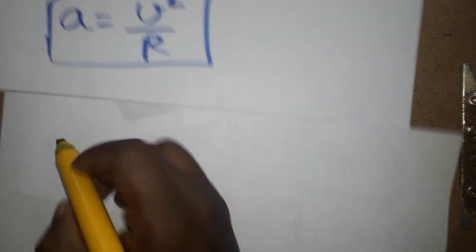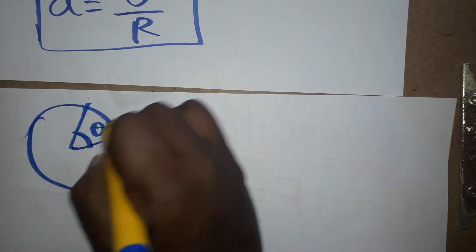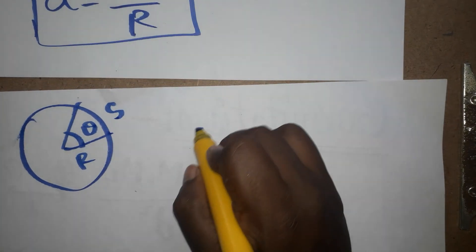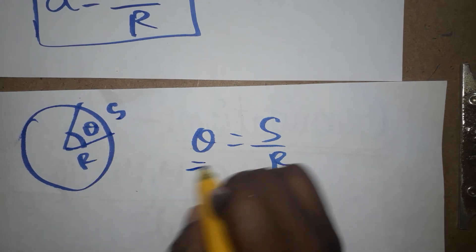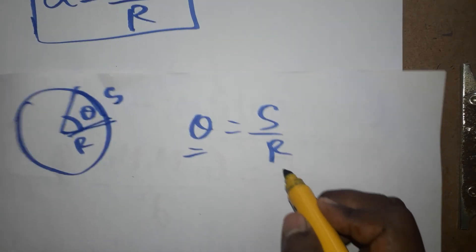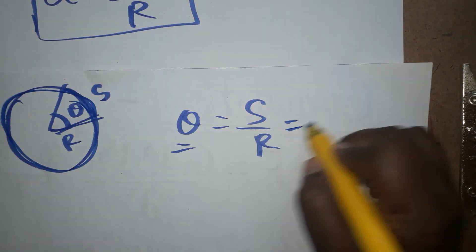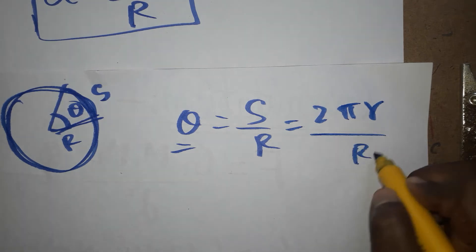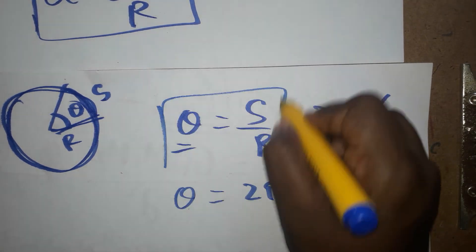In circular motion, when the object is moving in a circular path, theta is the angle, s is the arc length, and r is the radius. So theta is equal to s divided by r. As a quick proof: when a full rotation happens, the arc length equals the circumference, so s/r = 2πr/r = 2π. This confirms the formula is correct.